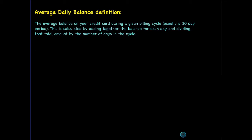Let's look at what the average daily balance is. The average daily balance on your credit card during a given billing cycle — typically 30 days — is calculated by taking a weighted average. A weighted average is taking the balance for each day and dividing it by the total number of days in the cycle, which would be 30. That's all that an average daily balance is — think of it just as a weighted average.